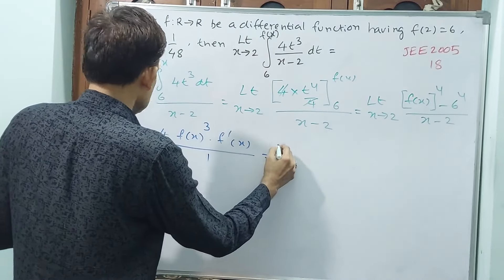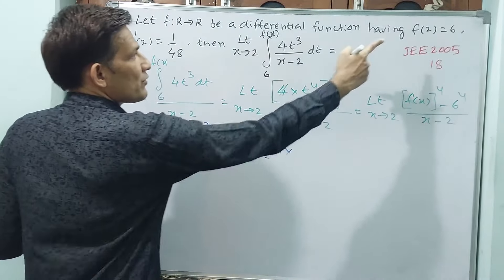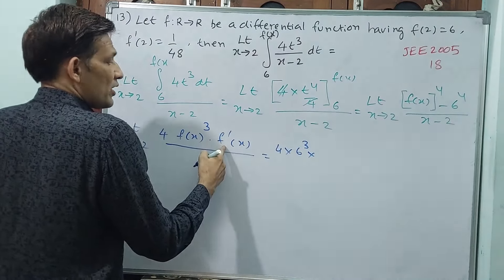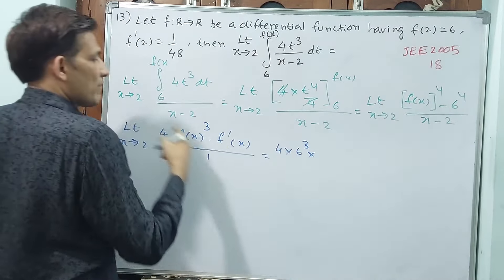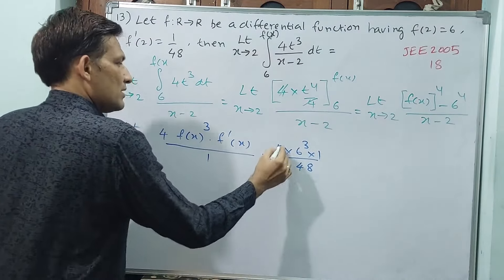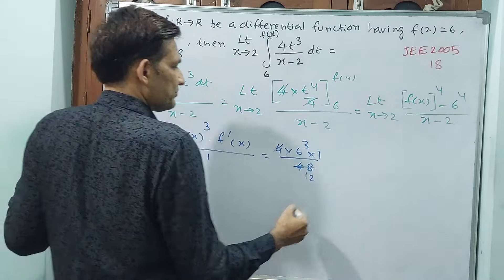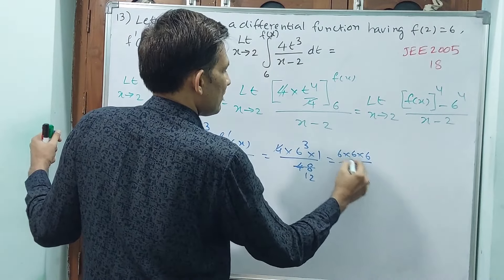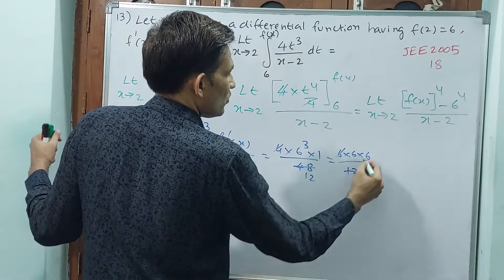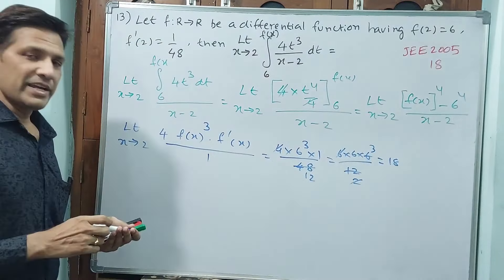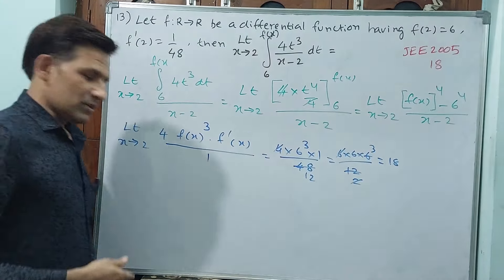That is equal to 4 into, f of x means 6 cube, f dash x means 1 by 48. See 4 and 12. 6 into 6 into 6 by 12. 6 twos, 2 threes, 6 threes are 18. 18 will be your answer. So, let us go for next question.